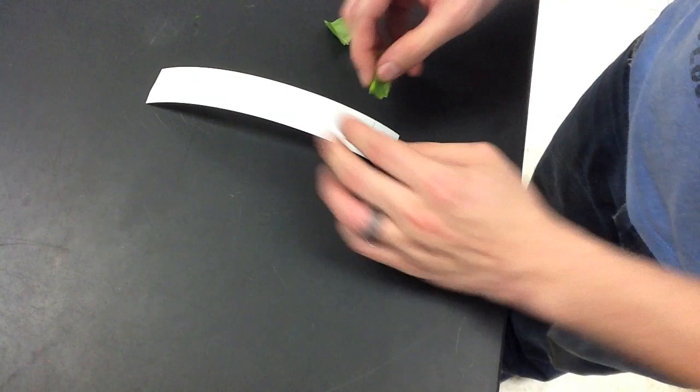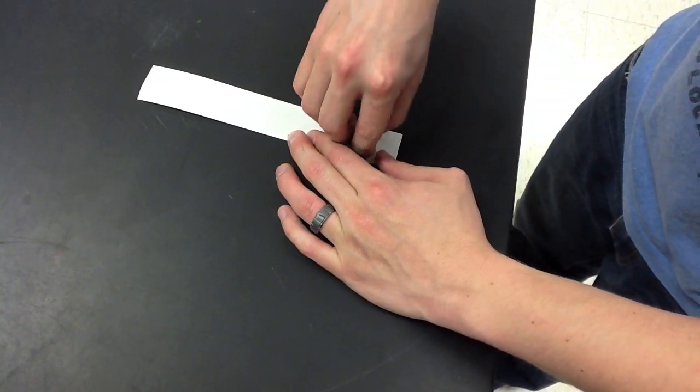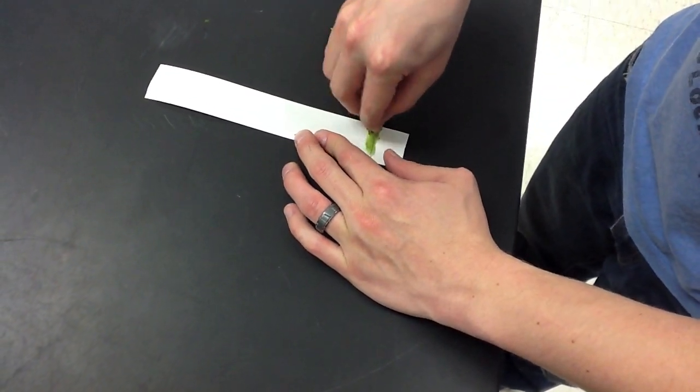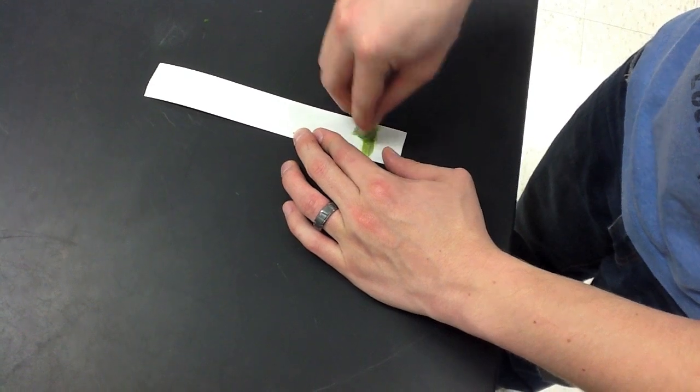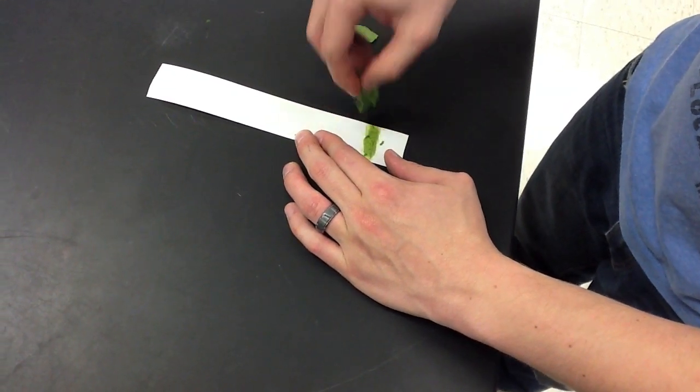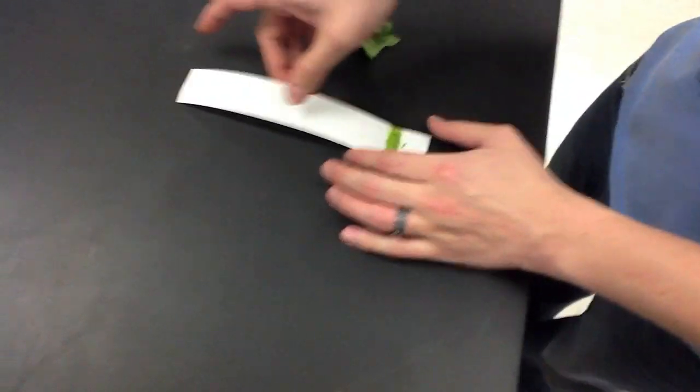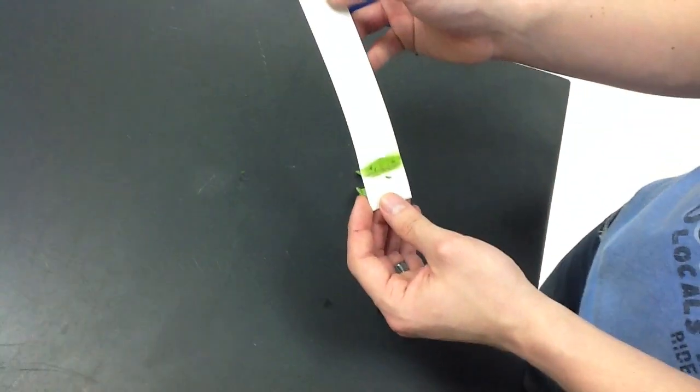To start the chromatography experiment, we took a spinach leaf and using either a car key, a coin, or your fingernails, we rubbed a line of pigments from the spinach leaf approximately two centimeters from the bottom of the piece of chromatography paper.